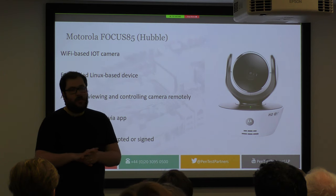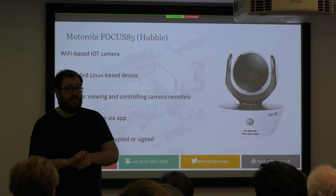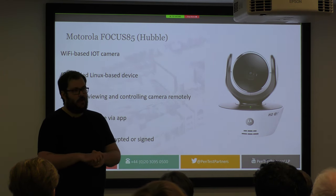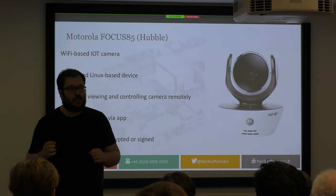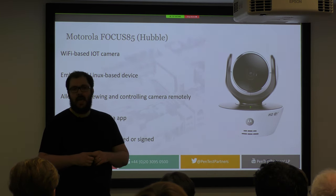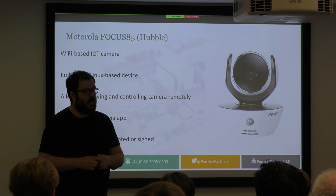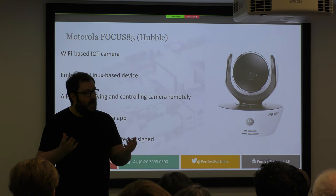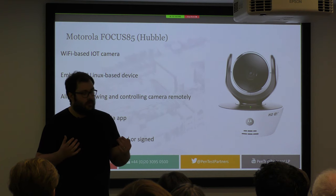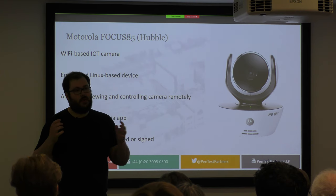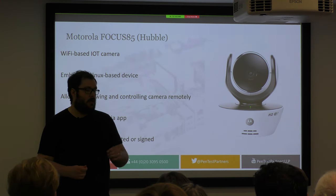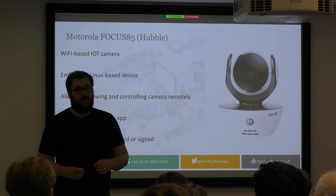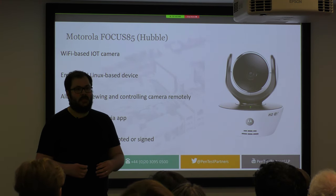This is the Motorola Focus 85 — a smart camera I use at home, even though I know it's incredibly insecure. It's a Wi-Fi based IoT camera and, while it looks like a camera, it's pretty much just a Linux box inside a case. It allows for viewing and controlling the camera remotely, updates firmware via an app, and none of those firmware updates were encrypted, signed, or even had any kind of error checking. So if I modified the app, I could add my own backdoors into that device.